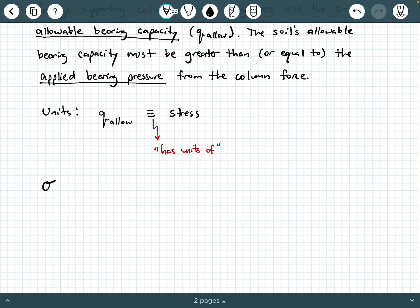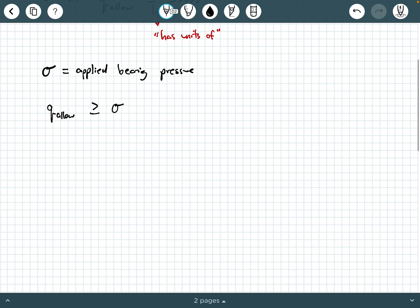So if we call sigma is the applied bearing pressure, then we're saying that Q allowable must be greater than or equal to sigma. So that's our basic relationship. Now, graphically and visually, what would this look like?